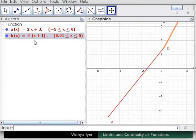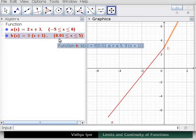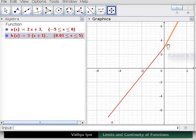The equation b of x equals 3 times x plus 1 where x varies from 0.01 to 5 appears in Algebra View. Its graph appears in Graphics View.